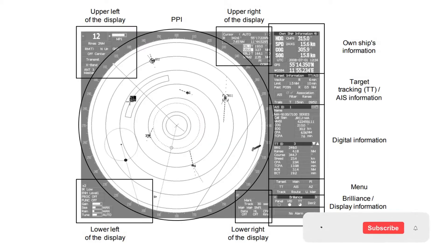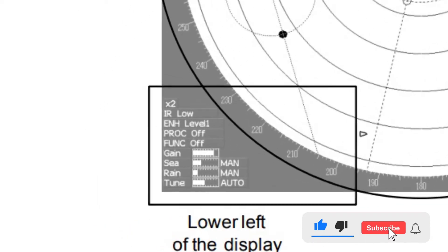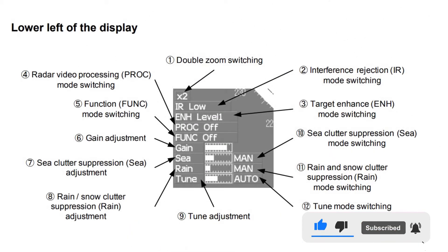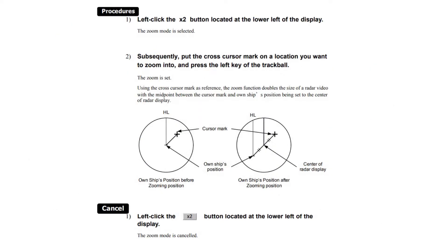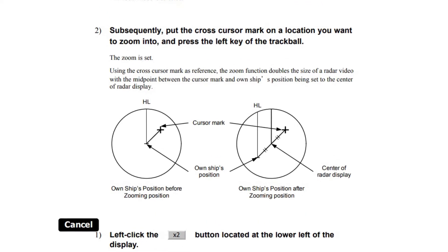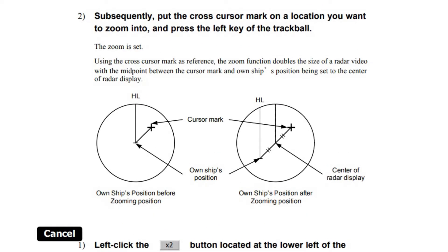Hi everyone, welcome back to the second part of the radar tutorial. Let's see some more radar functions. The double zoom function doubles the size of radar video near a specified position. Using the cross cursor mark as reference, the zoom function doubles the size of the radar video with the midpoint between the cursor mark and own ship's position being set to the center of the radar display.